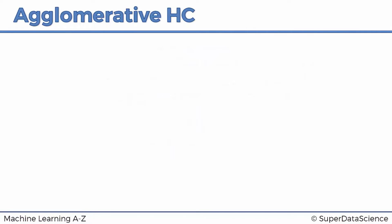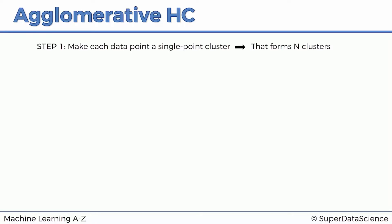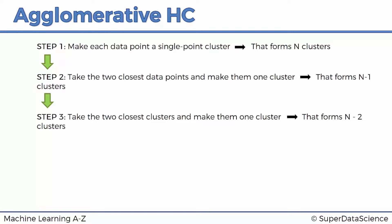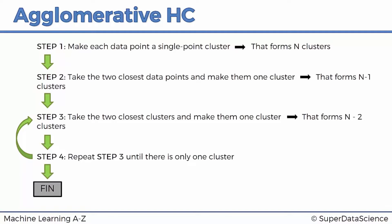So how does agglomerative hierarchical clustering work? Step one: make each data point a single-point cluster, forming N clusters. Step two: take the two closest data points and combine them into one cluster, forming N-1 clusters. Step three: take the two closest clusters and make them one cluster, forming N-2 clusters. Step four: repeat step three until there is only one cluster left.